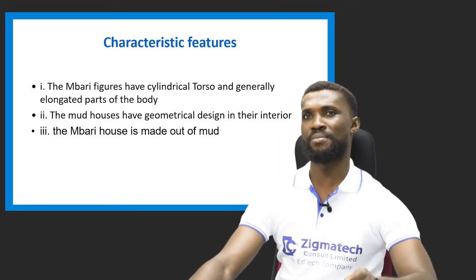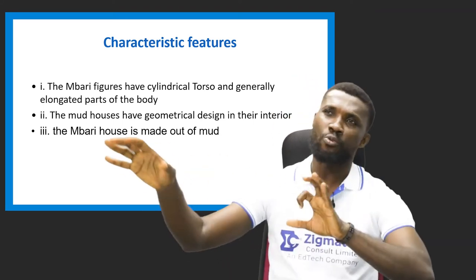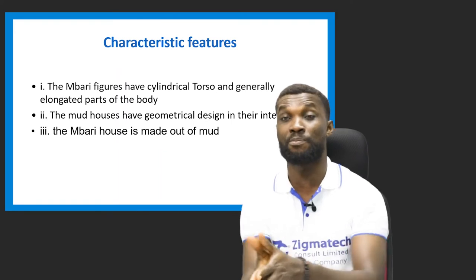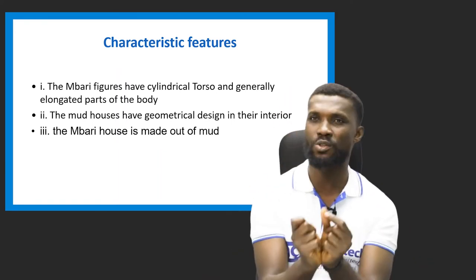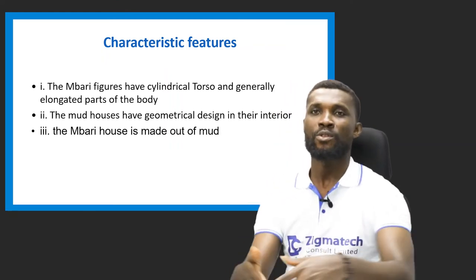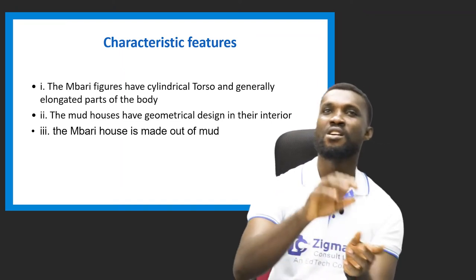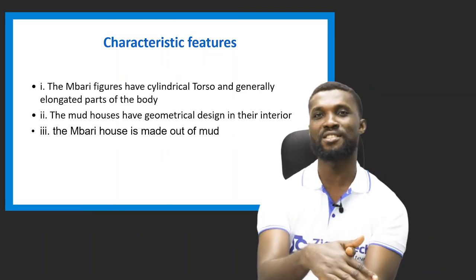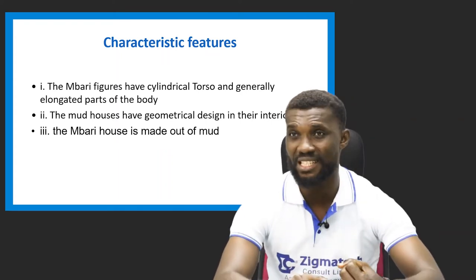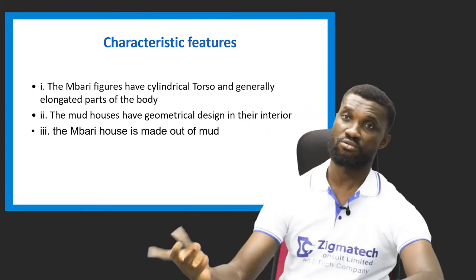The second characteristic feature of Mbari art is that the mud houses have geometrical designs on their interiors. Just as cavemen painted on walls and ceilings, the Mbari people paint geometric shapes on the interior walls — angular shapes, circles — which also reflect on the sculptural pieces. Finally, the Mbari House is made entirely of mud; they do not use concrete. Only the roof uses thatch, palm fronds, and reeds.